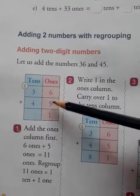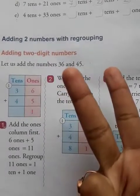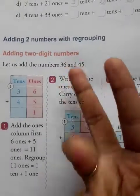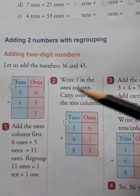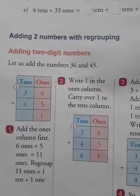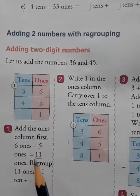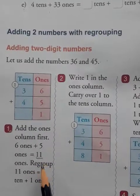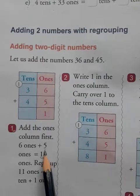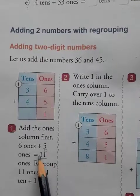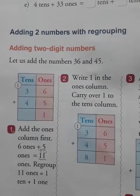Here 6 and 5 are in the ones column. We add 6 and 5: 6, 7, 8, 9, 10, and 11. So 6 plus 5 is equal to 11. You can observe that this 1 is in the ones place and this 1 is in the tens place.